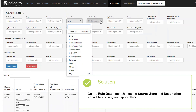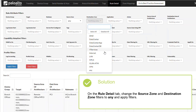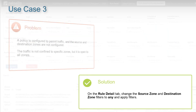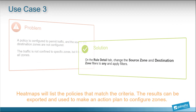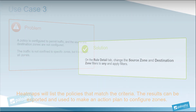To identify rules with open source and destination zones, change the source zone and destination zone filters to any on the Rules Detail tab and apply filters. Heatmap specifically lists the policies that match this criteria, which can be exported and made into an action plan to configure the zones.